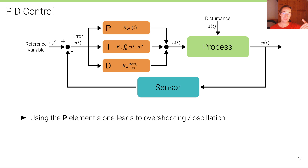Using the proportional element alone leads to overshooting and oscillation because as we are reducing the error, as soon as we pass the zero-error level, we're going into the other direction. The controller has no idea that we have already approached zero, so it continues and increases the error with a negative sign.